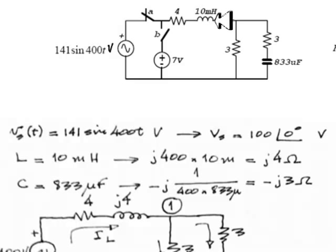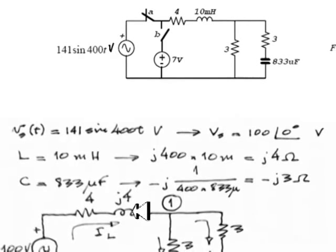The reactive elements, the inductor and the capacitor, will be represented by their impedances. So the 10 mH inductor is going to be represented by j omega L. Omega is 400 radians per second. That impedance is j 4 ohms. So this inductor will be represented as here by that j 4 ohms impedance.